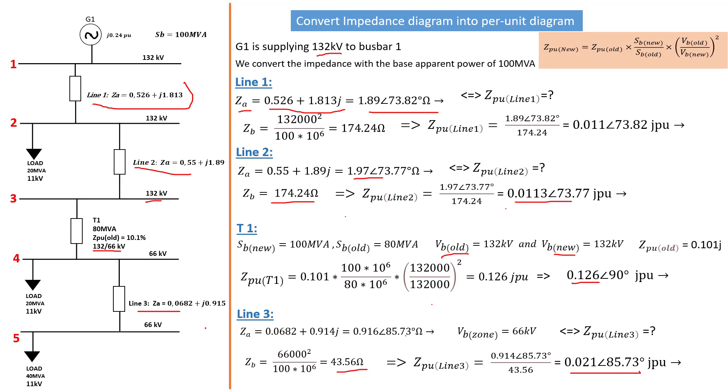So this is how you convert an impedance diagram into a per unit diagram. In the next tutorial I'm going to replace all these impedances with the corresponding per unit that we just calculated from each line and the transformer. From there we're going to be able to determine the short circuit current, the short circuit magnitude for each bus bar. Then we can talk about what kind of protection and rating we need for the current transformers and relays.